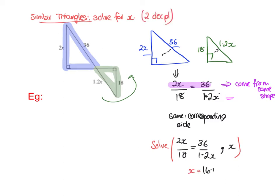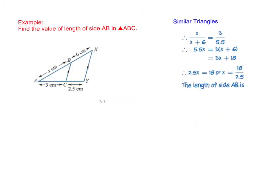Now find the value of side AB in triangle ABC. Remember that you also have similar triangles when all angles inside the triangles are the same. For example, a small triangle with angles 20, 80, and 80 and a larger triangle with angles 20, 80, and 80 are similar, because if the angles are the same, the triangles are similar.